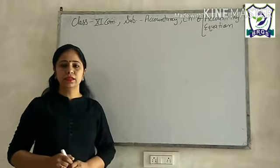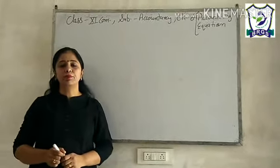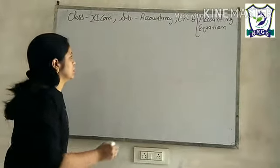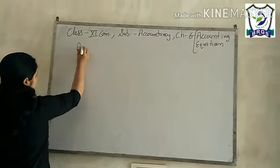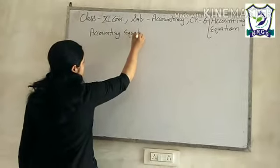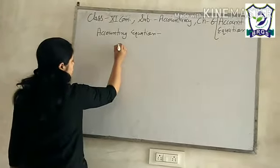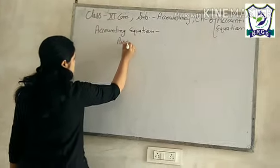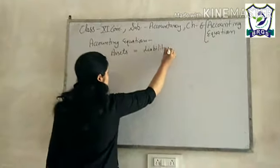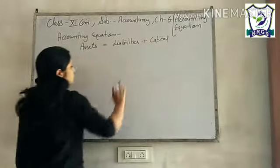This is a chapter in which we will solve numericals. All the remaining chapters are mostly of practical questions and analytical questions. What is accounting equation? Accounting equation: Assets = Liabilities + Capital. This is the accounting equation.